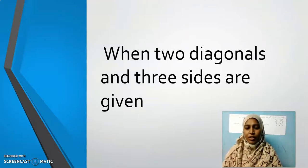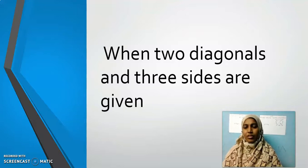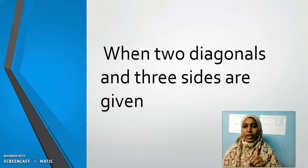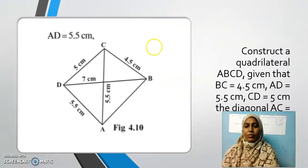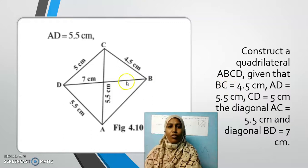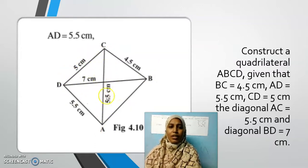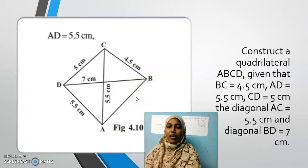Hi children, today we are going to construct a quadrilateral when two diagonals and three sides are given. In previous session, we learned when four sides and one diagonal, and here three sides and two diagonals are given. Construct quadrilateral ABCD given that BC equals 4.5 cm, AD equals 5.5 cm, CD equals 5 cm, diagonal AC equals 5.5 cm and diagonal BD equals 7 cm. Here also we can construct a quadrilateral.